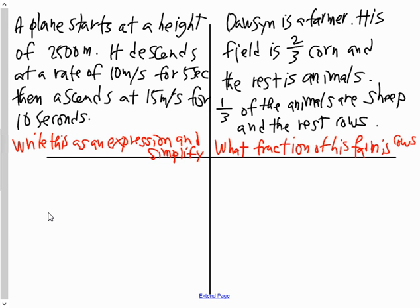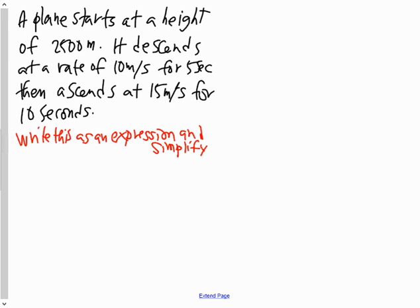The first question: a plane starts at a height of 2,500 meters. It descends at a rate of 10 meters per second for five seconds, then ascends at 15 meters per second for 10 seconds.